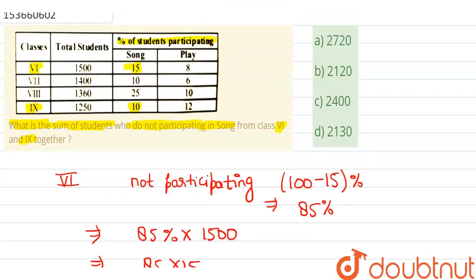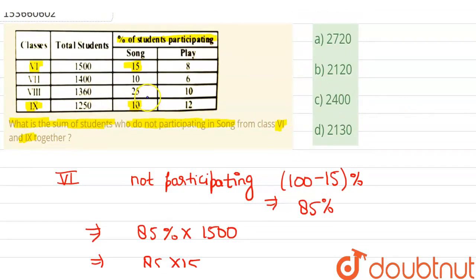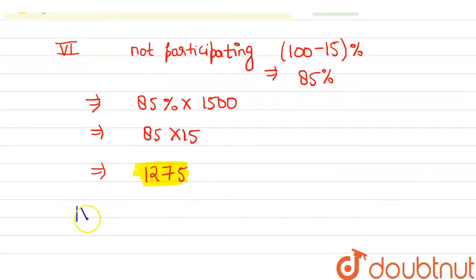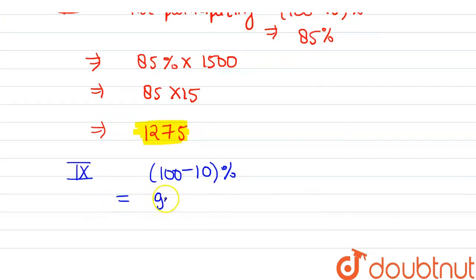Now we look at class 9 which is not participating. You can see that 10% are participating. So for class 9, what will not be participating? 100 minus 10%, which means 90% are not participating.